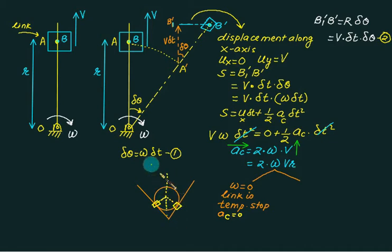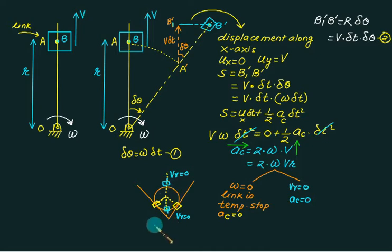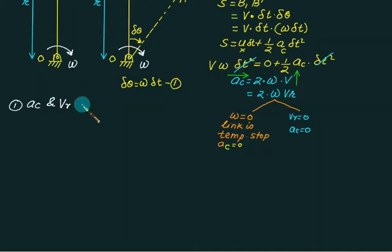v_r equals zero is possible when the crank is in the vertical position, where the slider cannot go further outward or downward. So at these two extreme positions, the Coriolis component equals zero. For all other positions, the Coriolis component exists. For four positions of the crank-slider mechanism of a shaper machine, the Coriolis component equals zero; for all remaining positions it is always present. a_c and v_r are always perpendicular to each other.